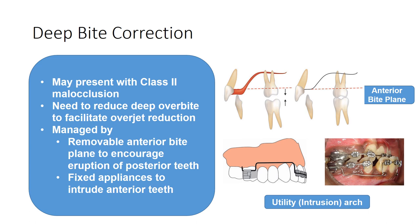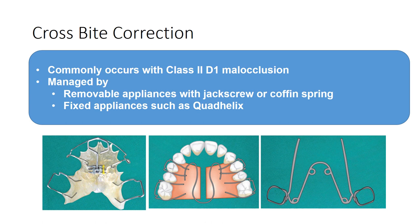When a Class 2 Division 1 presents with a deep bite, deep bite correction is necessary for overjet reduction. This can be achieved using a removable anterior bite plane, which encourages eruption of the posterior teeth, or using fixed appliances with utility arches to intrude the anterior teeth. When Class 2 Division 1 presents with a posterior crossbite, as in cases of digit sucking habit, this can be corrected using removable appliances carrying a jackscrew or coffin spring, or fixed appliances such as the W-arch or quad helix.